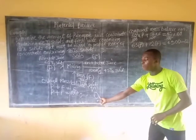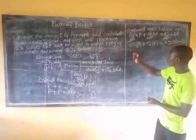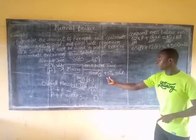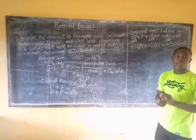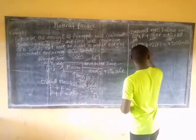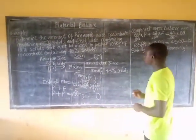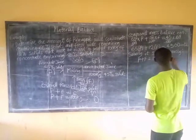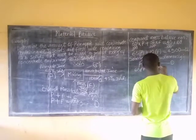We have now successfully formed our overall mass balance equation and our component mass balance equation. To find the amount of fresh juice and pineapple juice, we solve these two equations simultaneously. Equation 1: P + F = 100. Equation 2: 65P + 12F = 4500.